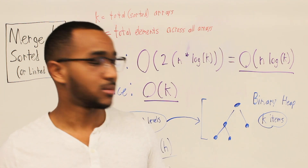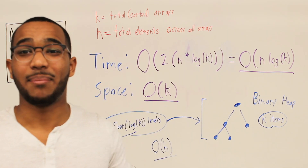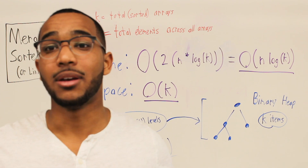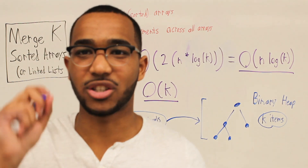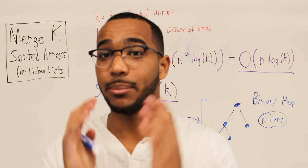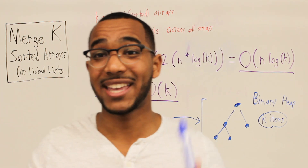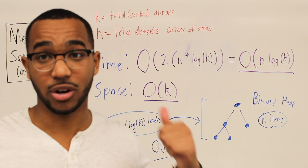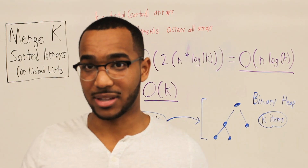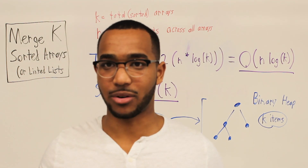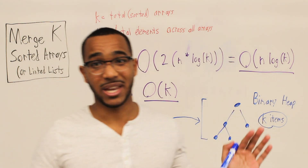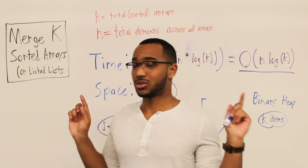For space: at maximum, we hold k items in the heap — the smallest item from every array, and we have k arrays. So our heap holds at most k items, giving us O(k) space. That is the time and space complexity for this solution.